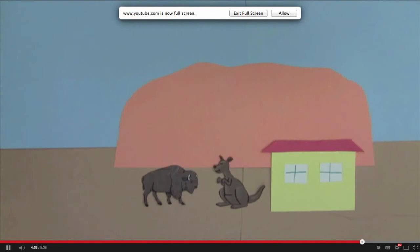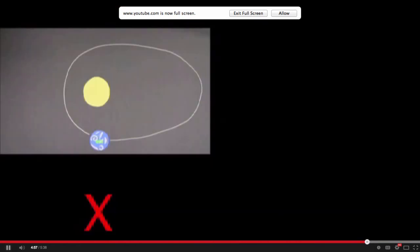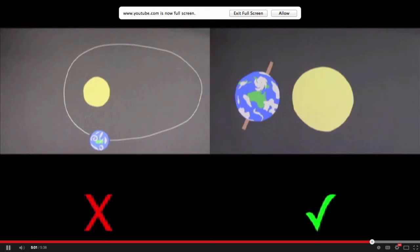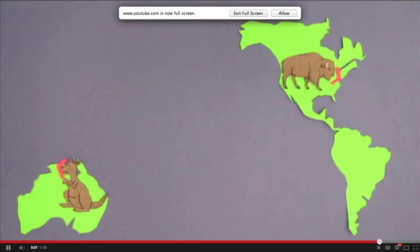And, now you know the reason for the seasons. Awesome. So, it's not how close the Earth is to the sun that matters, but instead, it's the tilt of the Earth. Which is also why it's winter in Australia, at the same time as it's summer in America. You got it.